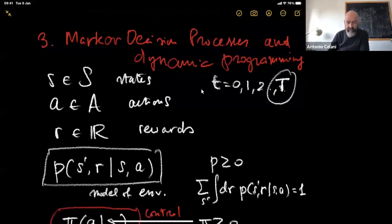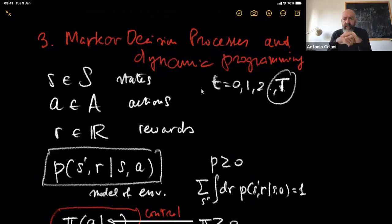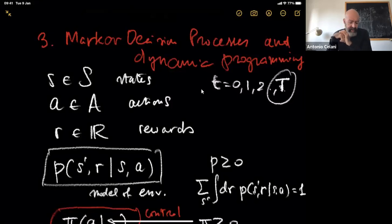Welcome back everybody. For today's lecture, we are going to deal with different settings of the markup decision problem. The subject will still be essentially tightly connected with the one we approached last lecture, with the difference that we now have a more approachable problem because we are going to do away with the time dependence of the optimal solutions. Let me start with a quick recap of what we did last lecture.